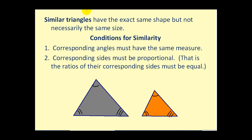For example, if this side is 8 inches long and this side is 4 inches long, the ratio between these two would be two to one. Therefore, if this side was 10 inches long, this would have to be 5 inches, and if this was 12 inches long, this would have to be 6 inches. The ratio stays consistent with the corresponding sides.